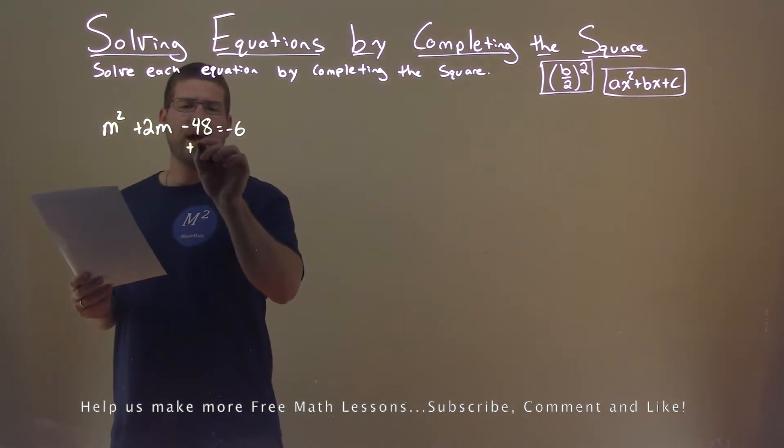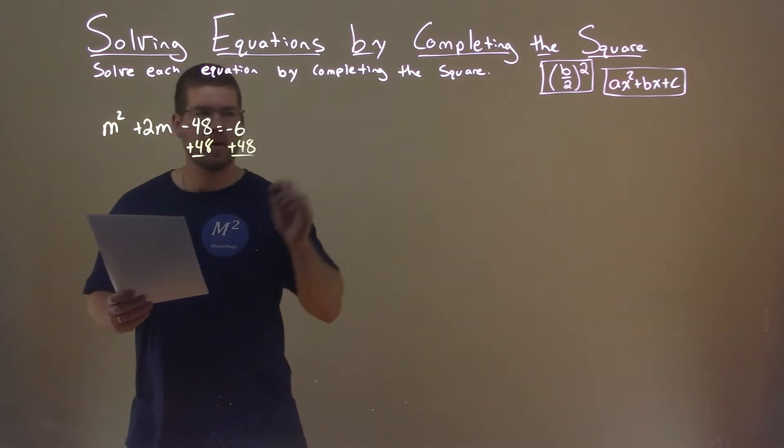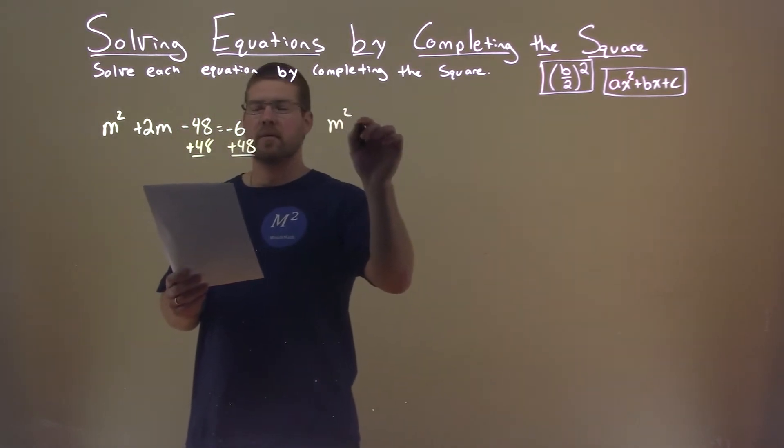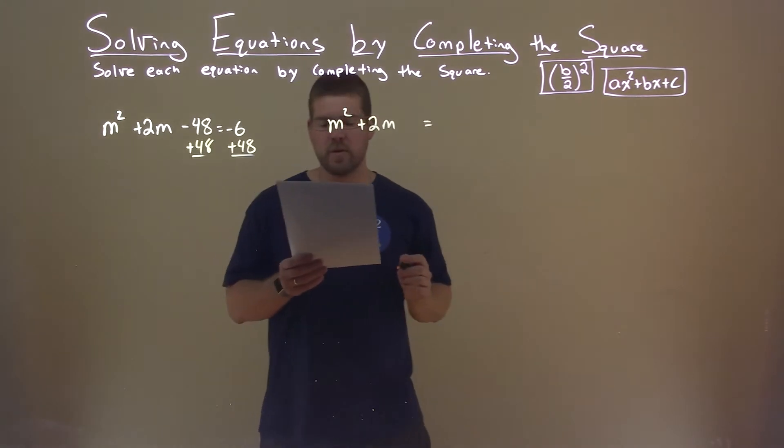The first thing I want to do is add 48 to both sides of the equation. That gives us m squared plus 2m equals, well, negative 6 plus 48 equals 42.